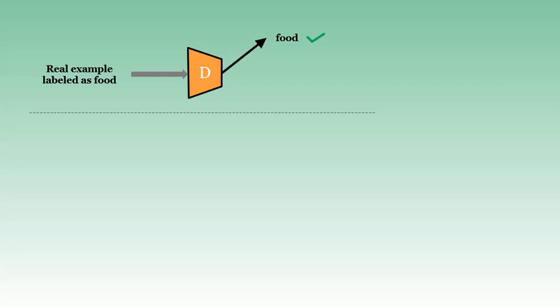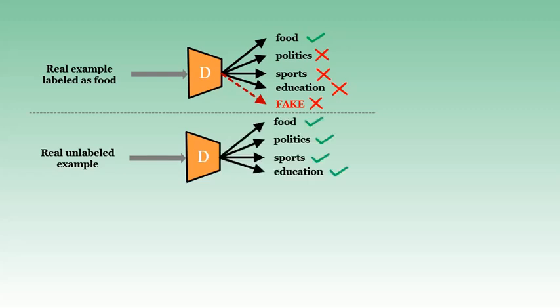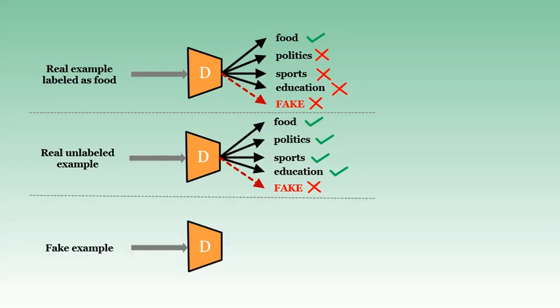Take a real labeled example of the food class as input to the discriminator — it could correctly predict it as the food class or misclassify it as one of the other classes. The training process would try to rectify the discriminator in case of misclassification. If the input is real and unlabeled data, the output prediction is fine as long as it belongs to one of the four target classes, but the discriminator gets penalized only when it predicts the fake class.